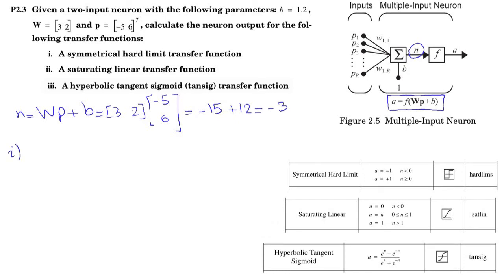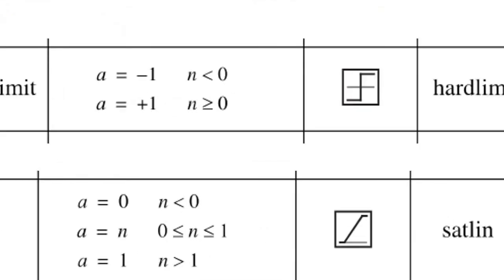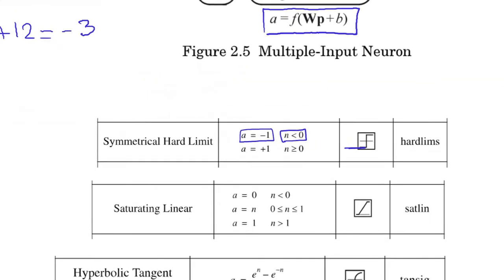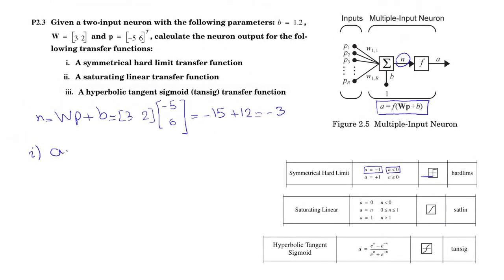So A, we are going to use the transfer function, symmetrical hard limit transfer function, is this one, that says for N less than 0, A equals minus 1. And then, our N is also less than 0. So A is hard assistant for symmetric of minus 3 equals minus 1.